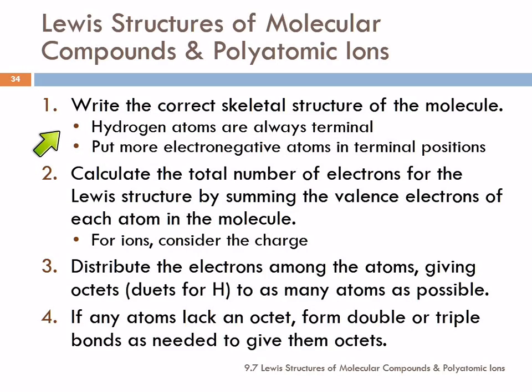After you figure out how you're going to connect them, then you need to figure out how many total valence electrons there are. You look at all the atoms in the molecule and add up the valence electrons that each of them has. If you have an ion, you have to consider the charge. If you have a negative charge, you add electrons. If you have a positive charge, you subtract them.